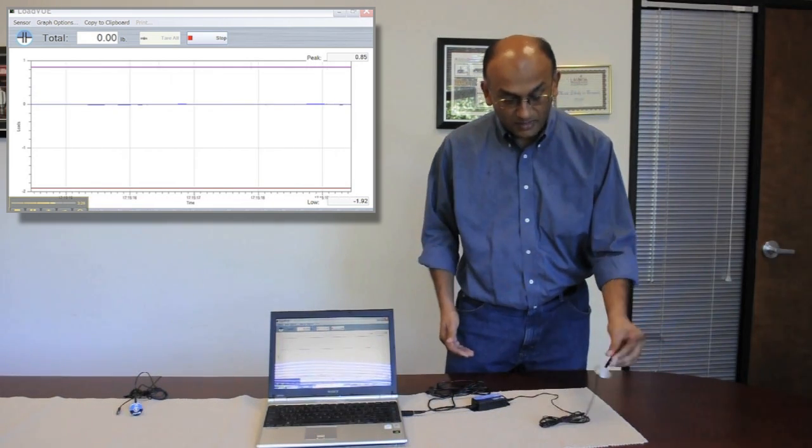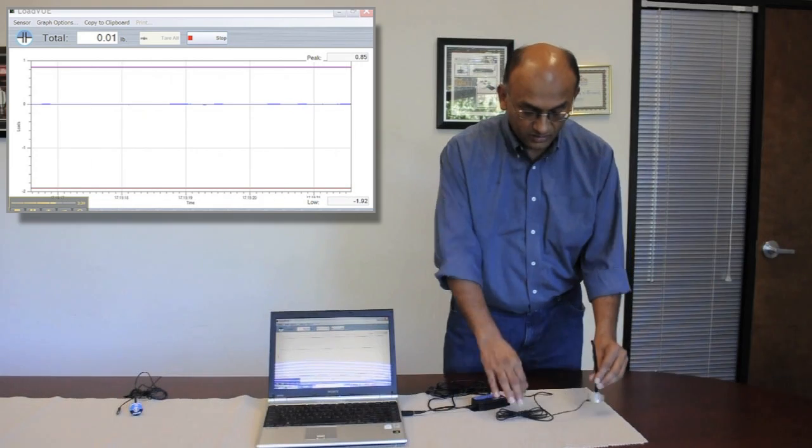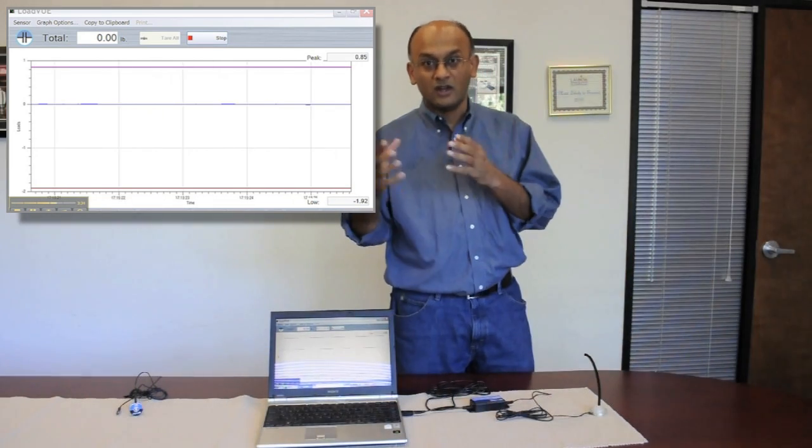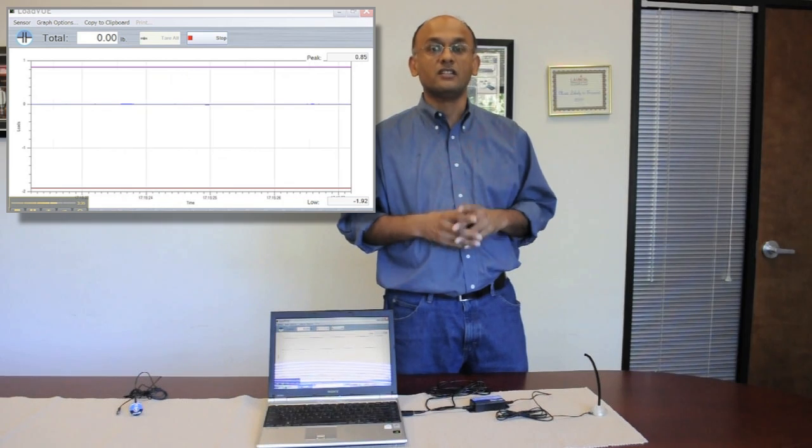You can take this sensor, mount it into any kind of configuration based on what your application needs are. If you want analog output, you can use our DQ1000A interface device which gives you a 0-5 volt output proportional to the applied pressure.